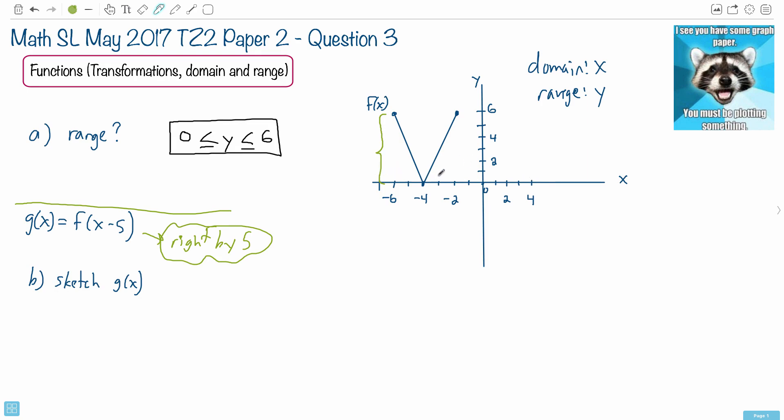So the things always go opposite to what you think. So had it said like x plus two, let's just say it was x plus two, you'd think, oh, it should go to the right by two. Nope, it goes left by two.